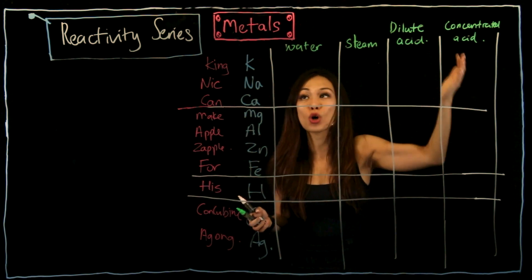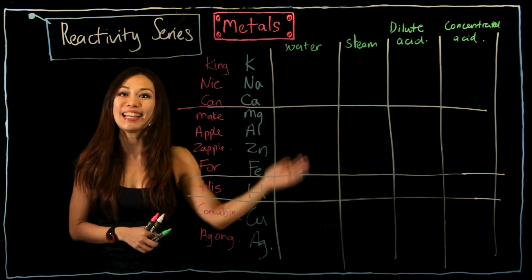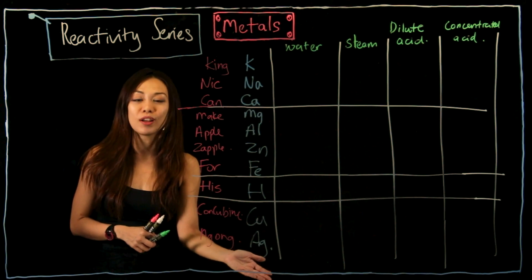And then it will show you who is the most reactive one. The most reactive metals are those on top. The least reactive metals are those below.